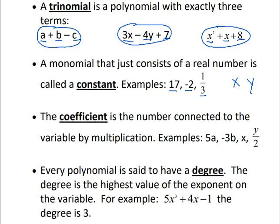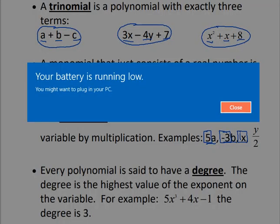The coefficient is the number connected to the variable by multiplication. In 5a, the coefficient is 5 because that is the number connected to the variable by multiplication. In negative 3b, negative 3 is the coefficient. For just x, anytime we don't see a coefficient it's understood to be 1 — there is 1x here, so the coefficient is understood to be 1.